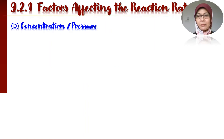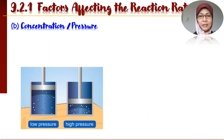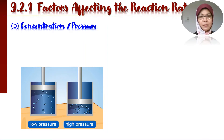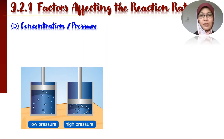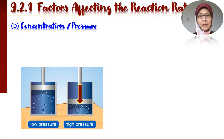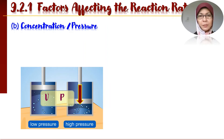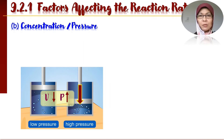Now, what about pressure? Consider this diagram. Madam ada dua keadaan, low pressure dan high pressure. Dalam kedua-dua keadaan ini, bilangan zarah-zarah adalah sama. Cuma, apabila isi padu Madam rendahkan — whenever we decrease the volume, kita tekan ombuh itu ke bawah, maka volume menjadi rendah. Dan seperti yang kita ketahui, apabila volume menjadi rendah, pressure menjadi tinggi. Jadi, kita boleh mengubah pressure dengan cara mengubah volume sahaja.